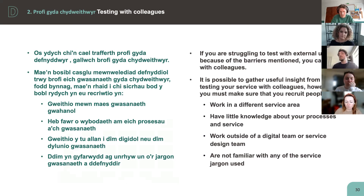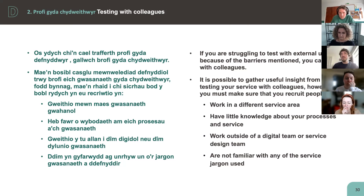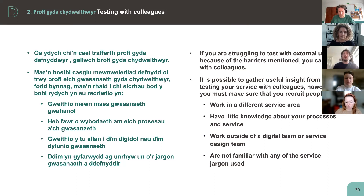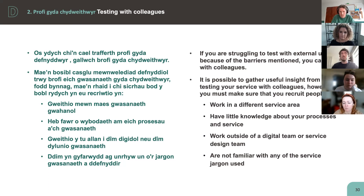If you're struggling to recruit citizen service users, you are able to test with colleagues, though you need to be quite strict about who you recruit. Recruit people who work in a different service area, who have little knowledge about your processes and service, and preferably people who work outside of a digital or service design team, and people who aren't familiar with in-house service jargon. Following those steps ensures the insight you gather is as unbiased as possible. We'd also encourage you to be as diverse and inclusive as possible with your recruitment to help uncover any accessibility issues.